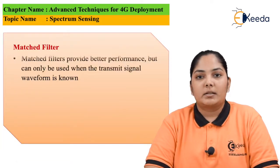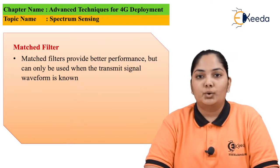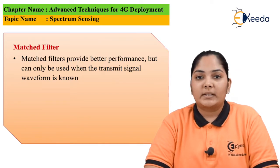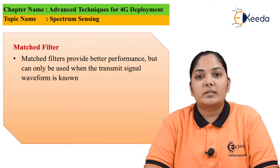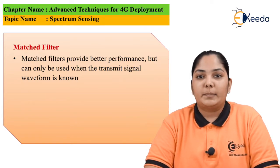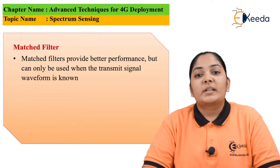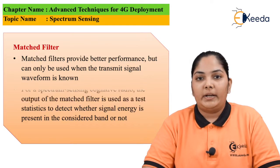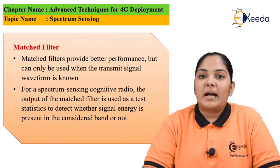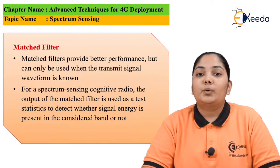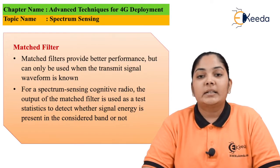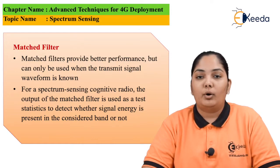Matched filters provide better results, but it is only possible when the transmitted signal is known. Once we know what kind of signal has been transmitted, by using the matched filter we are able to sense what signal is being transmitted in the next waveform. For a spectrum sensing cognitive radio, the output of this matched filter is used as a test element to identify whether the energy of the signal is present in the considered band or not.